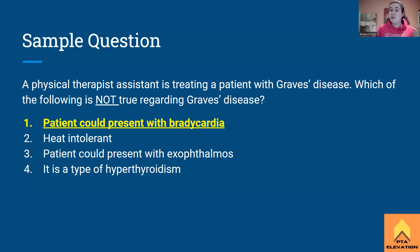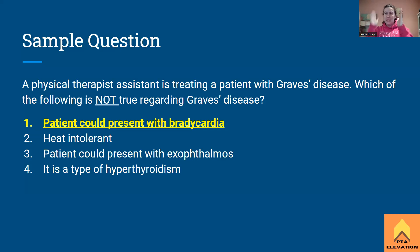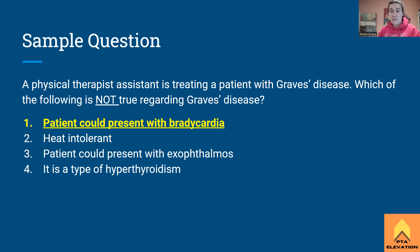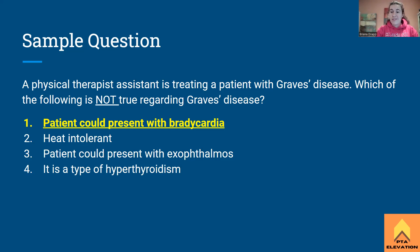With Graves' disease, everything is doing too much. Bradycardia is a slow heart rate, less than 60 beats per minute — but with Graves' disease, we would see tachycardia, an elevated heart rate above 100 beats per minute. Normal resting heart rate is 60–100 bpm; below 60 is bradycardia, above 100 is tachycardia. Heat intolerance is true, exophthalmos is associated with Graves' disease, and it is indeed a type of hyperthyroidism. For hypothyroidism, think Hashimoto's thyroiditis. That is everything you need to know about Graves' disease.